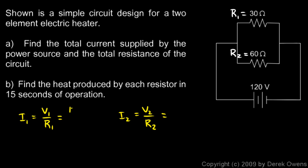So V1 is 120 volts and R1 is 30 ohms, and V2 is 120 volts and R2 is 60 ohms. So I1 comes out to 120 over 30, that's 4 amps, and I2 is 120 over 60, that comes out to be 2 amps.